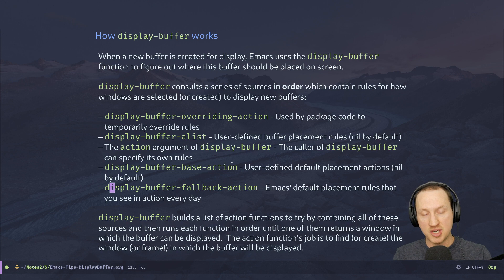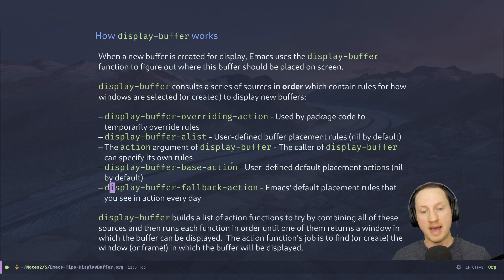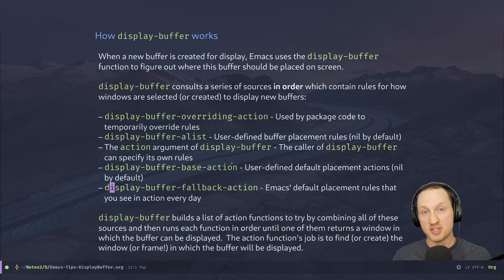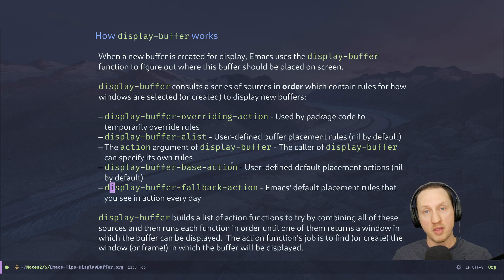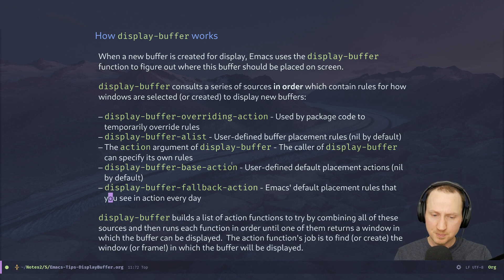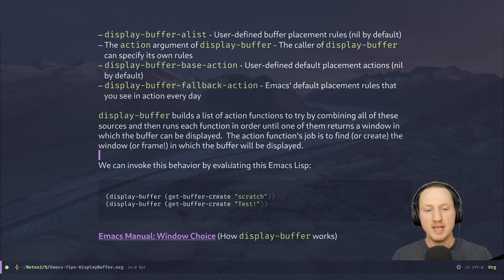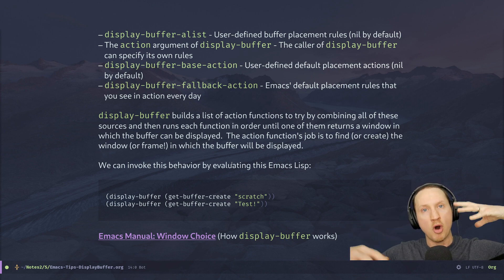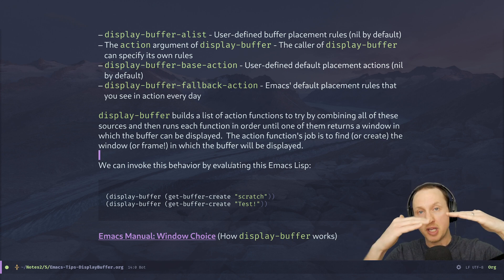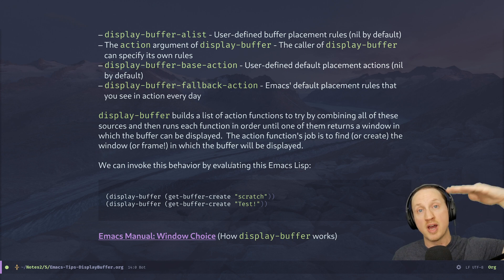display-buffer-fallback-action is interesting because it has the list of default placement actions for buffers in Emacs. If you want to know why Emacs places buffers in a certain way, you need to check this variable. Basically, display-buffer builds a list of action functions by gathering functions from all these different sources and putting them into an ordered list so they get tried one by one.